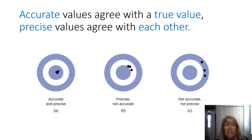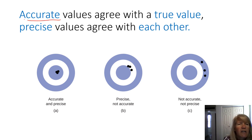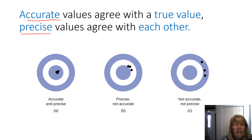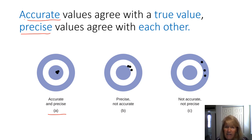Accurate shows how much a number agrees with the true value, and precise means they agree with each other. You can look at these targets: A is both accurate and precise because they hit the right spot — that's accurate — and they're close together — that's precise. You also see precise and not accurate, and neither accurate nor precise.